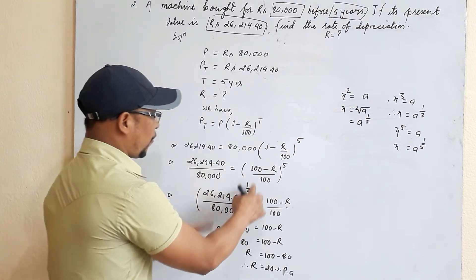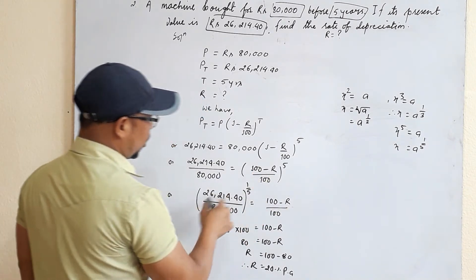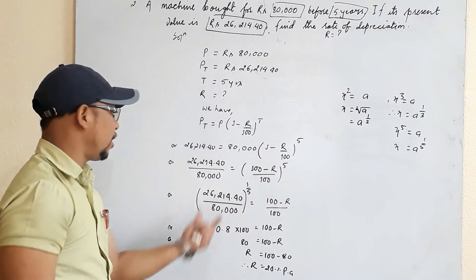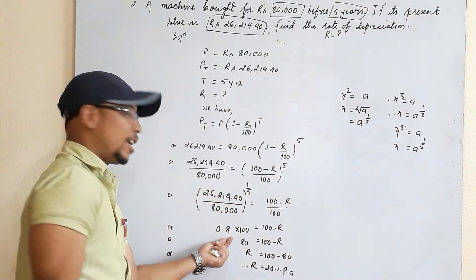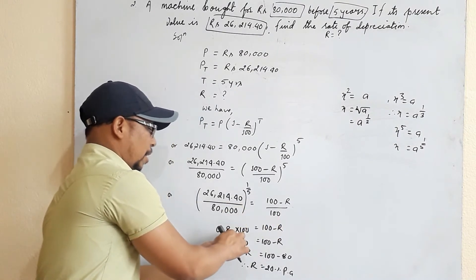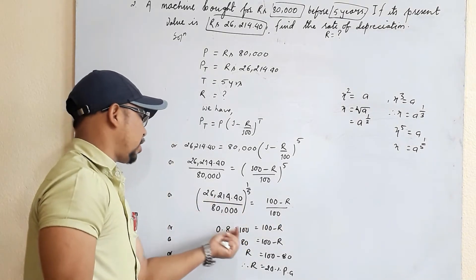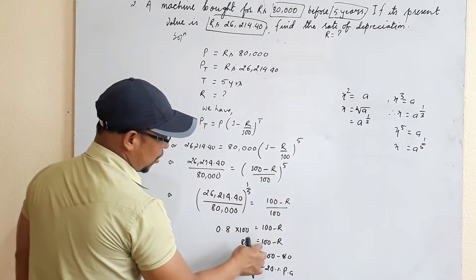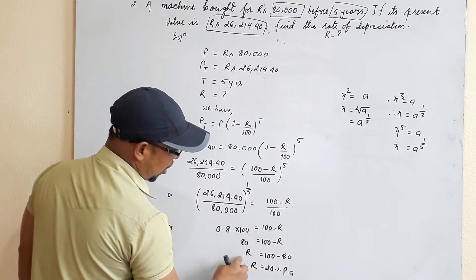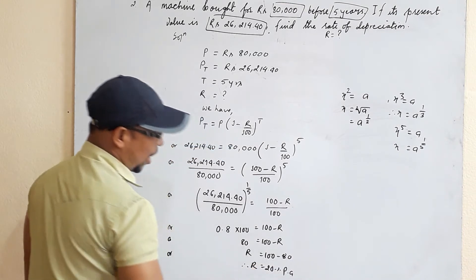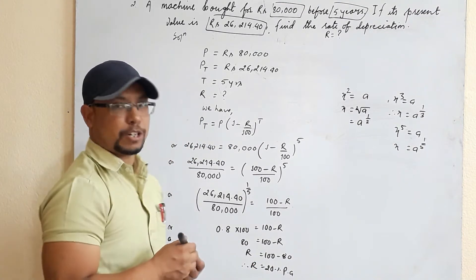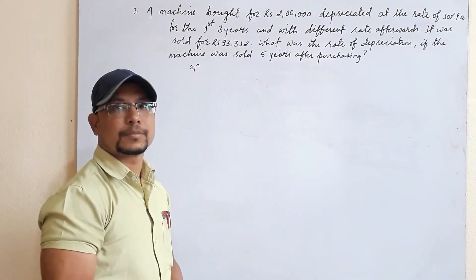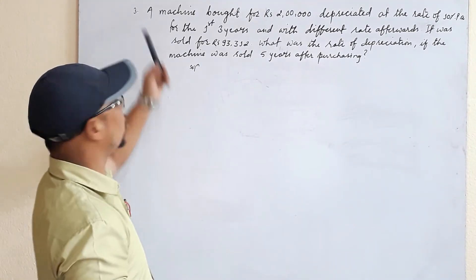Calculating (26,214.40 / 80,000)^(1/5) on a calculator gives 0.8. So 1 − r/100 = 0.8. Cross-multiplying: 100 − r = 80, therefore r = 100 − 80 = 20. The rate of depreciation is 20% per annum.